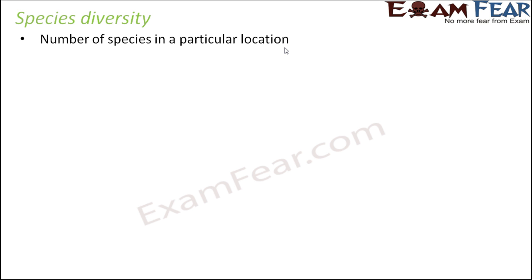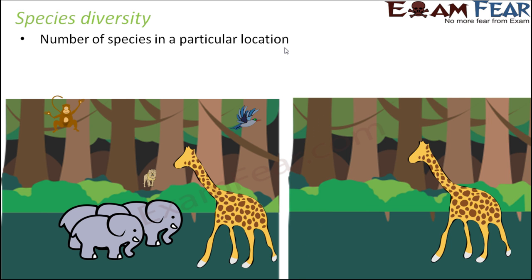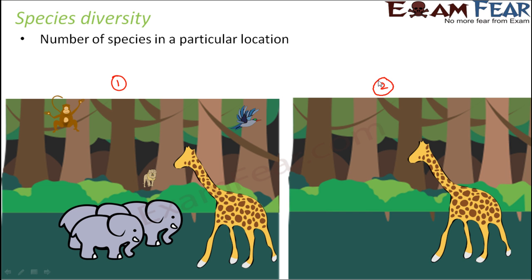Consider two communities: location one and location two. In location one there is a large variety of species — elephants, giraffes, lions, birds, monkeys — whereas location two has far less variety. We say location one is more diverse than location two because it has a greater number of species. This is species diversity: how many different types of species are present in a particular location.